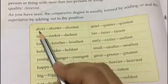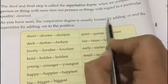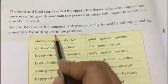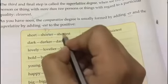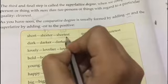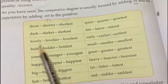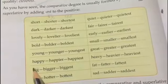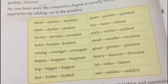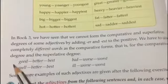The comparative degree is usually formed by adding -er, and the superlative by adding -est to the adjective. For example: short, shorter, shortest; dark, darker, darkest; lovely, lovelier, loveliest; bold, bolder, boldest; young, younger, youngest; happy, happier, happiest; big, bigger, biggest; hot, hotter, hottest.